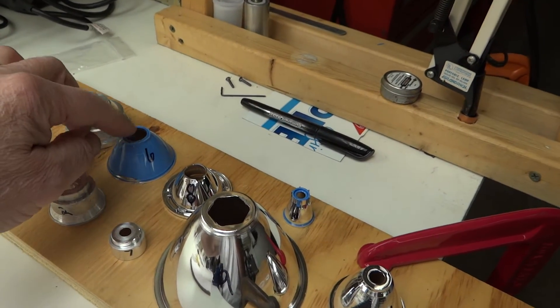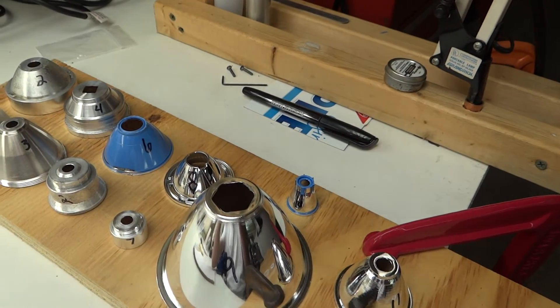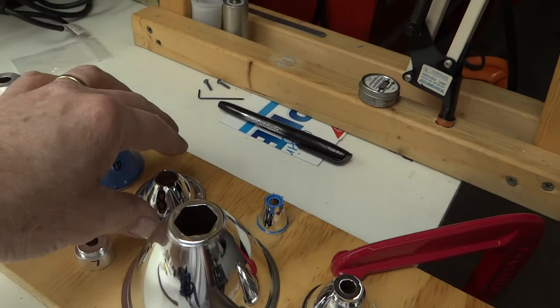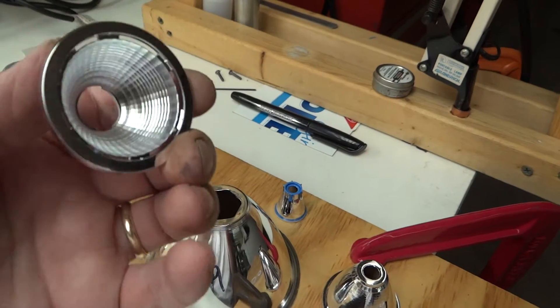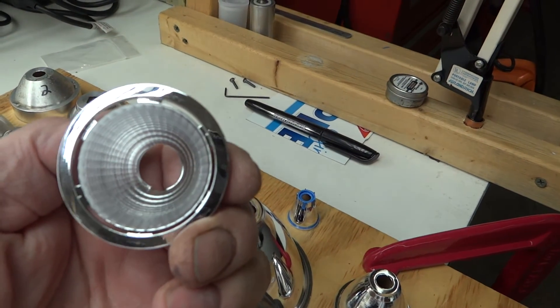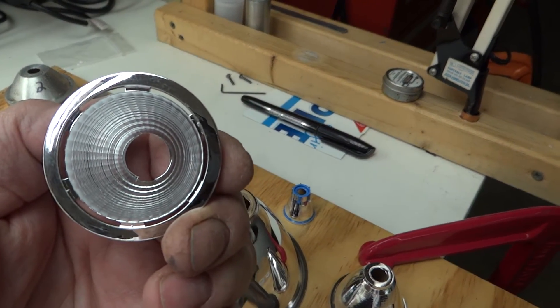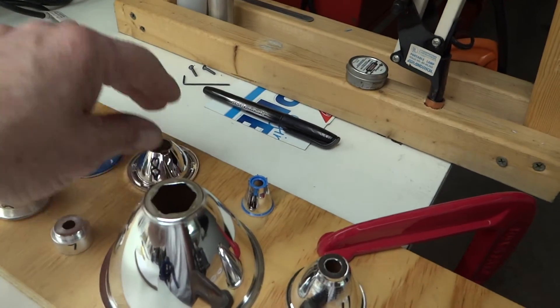This is an old Maglite incandescent reflector. I just want to see how that works. This is one of the faceted reflectors that's supposedly made to work with the XHP70. So there's a variation here.